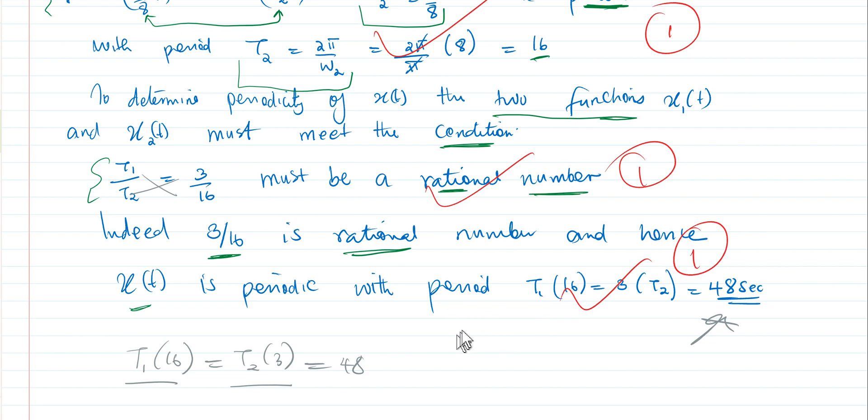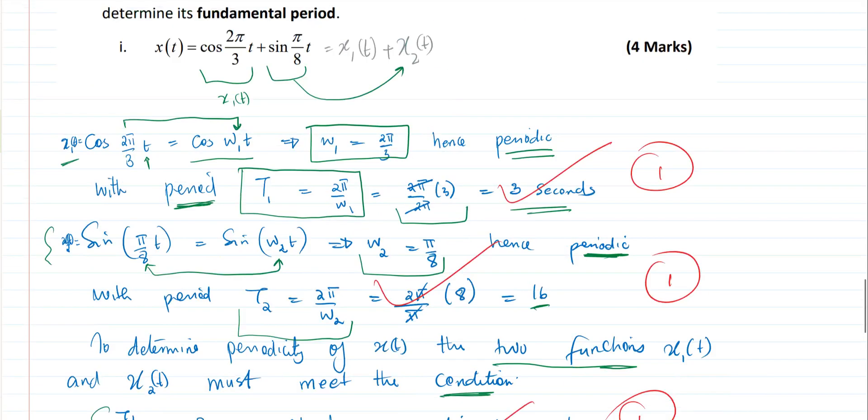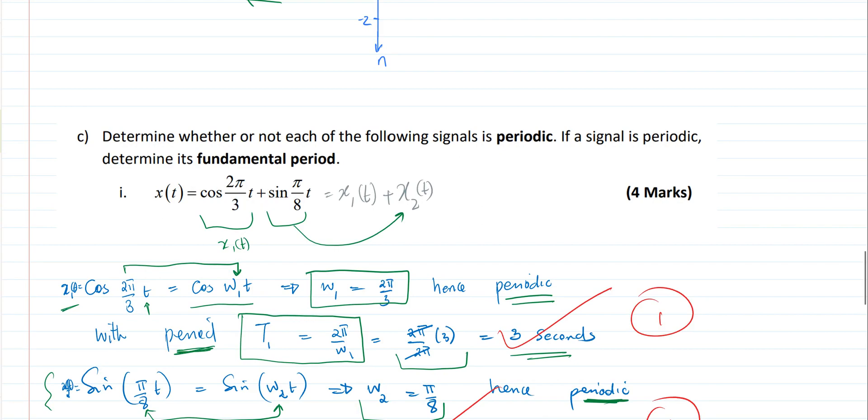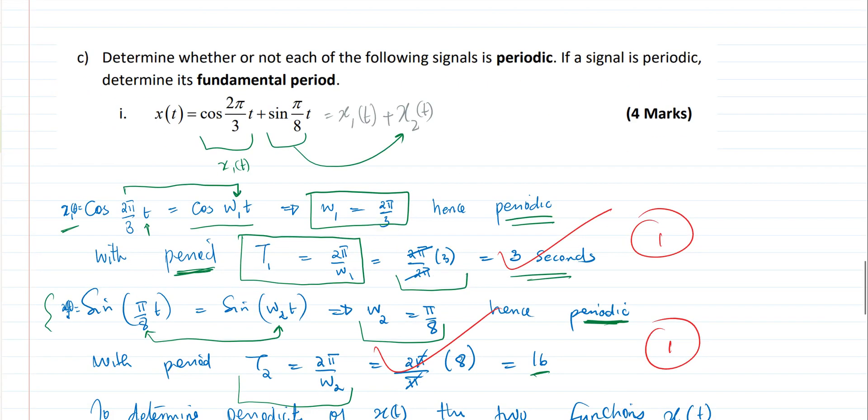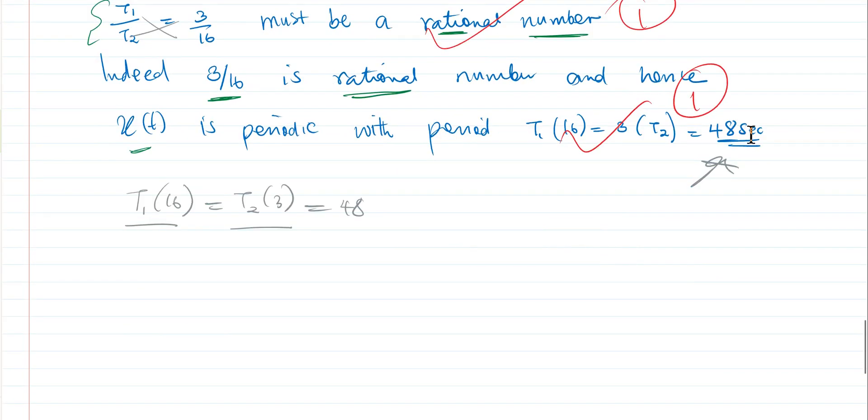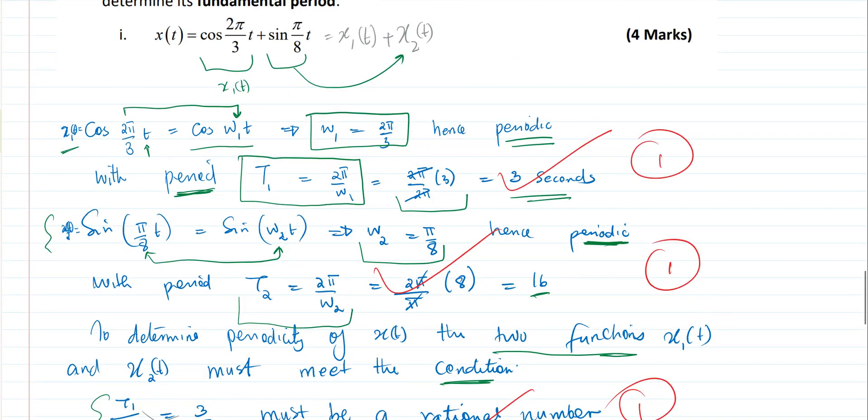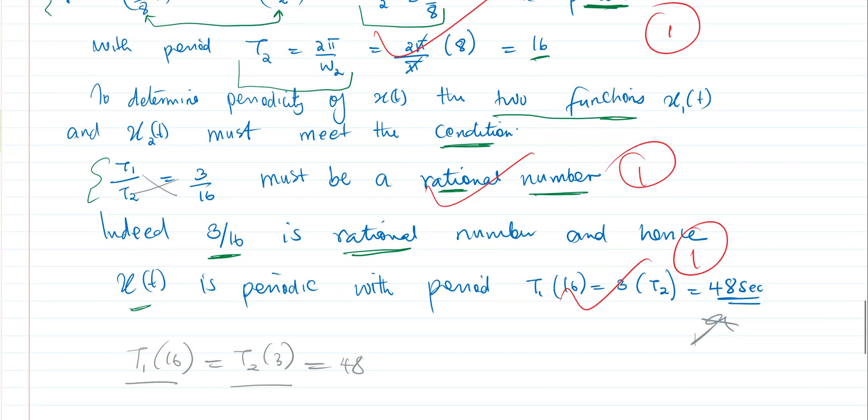So we have determined that our function x(t) expressed here is periodic. And number two, its period is 48 seconds. So when you draw this function, it will be repeating itself every 48 seconds.